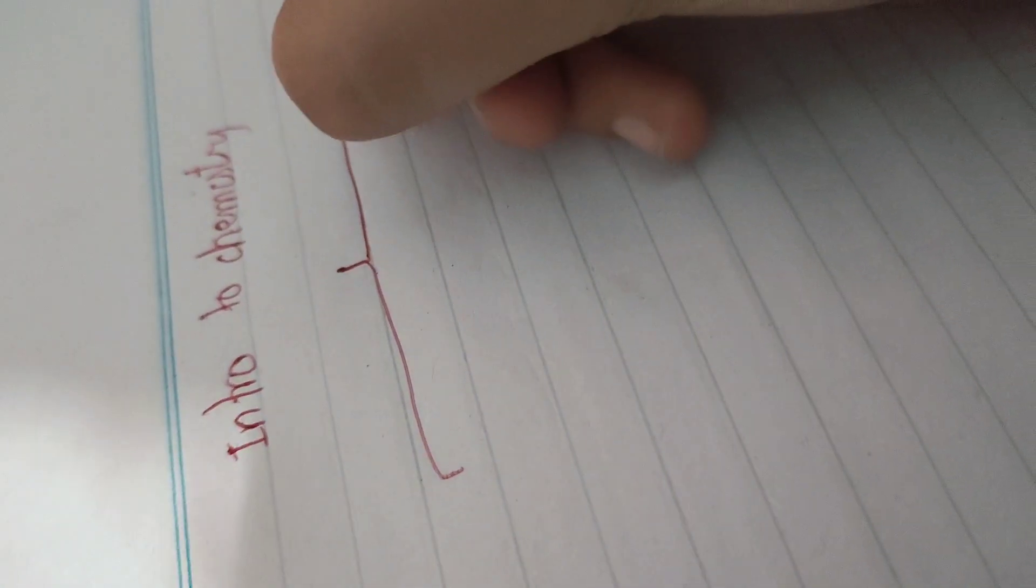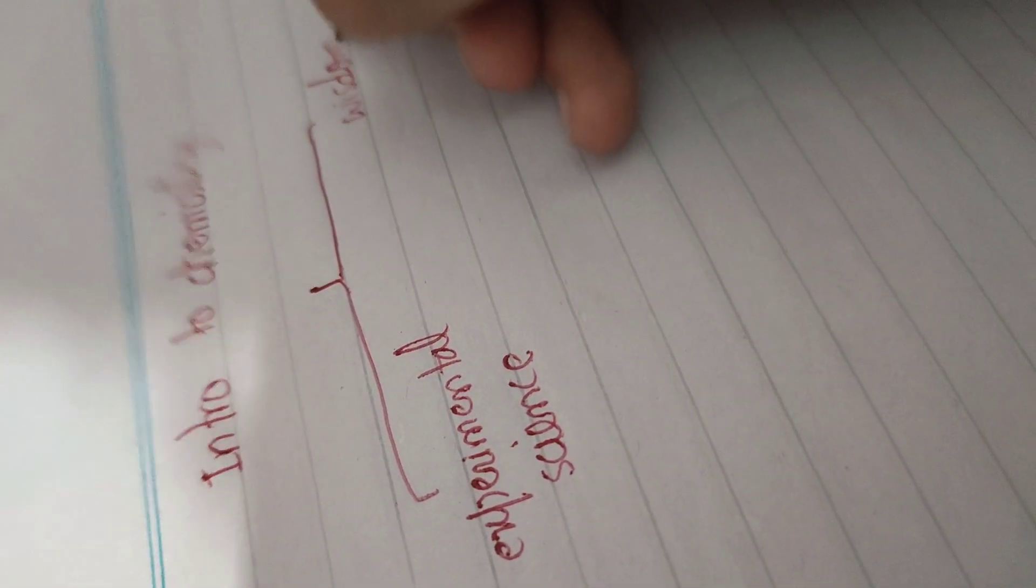In this chemistry video, we're going to talk about introduction to chemistry. First of all, we're going to see two types, two divisions. Number one is experimental science. Number second is wisdom science.